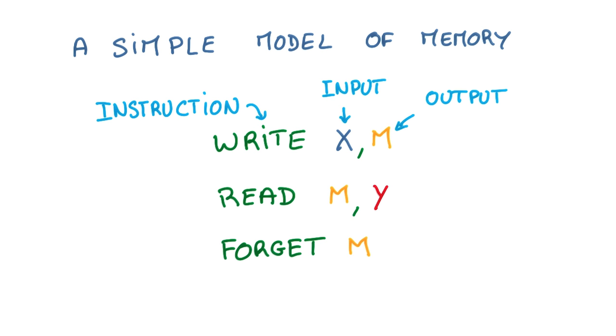Imagine that you want a system to have memory. You need to do three things. First, you need to write the data into the memory. Then you need to be able to read it back. And then you also want to be able to erase it or forget.